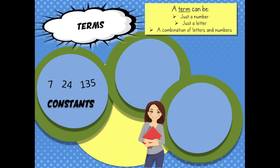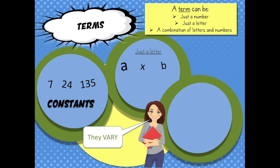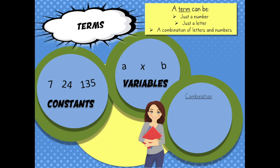A term can also be just a letter, like a, or x, or whatever letter you'd like. But the value of these letters changes depending on the problem — we say they vary, so we call them variables. Now there's no special name for the combination, but there is a special name for the number being multiplied by the variable. Those numbers are called coefficients.